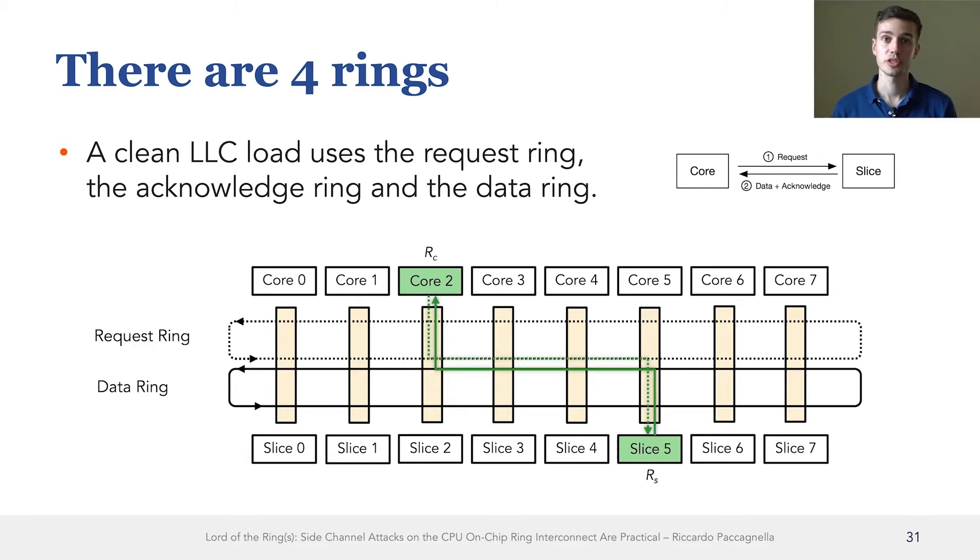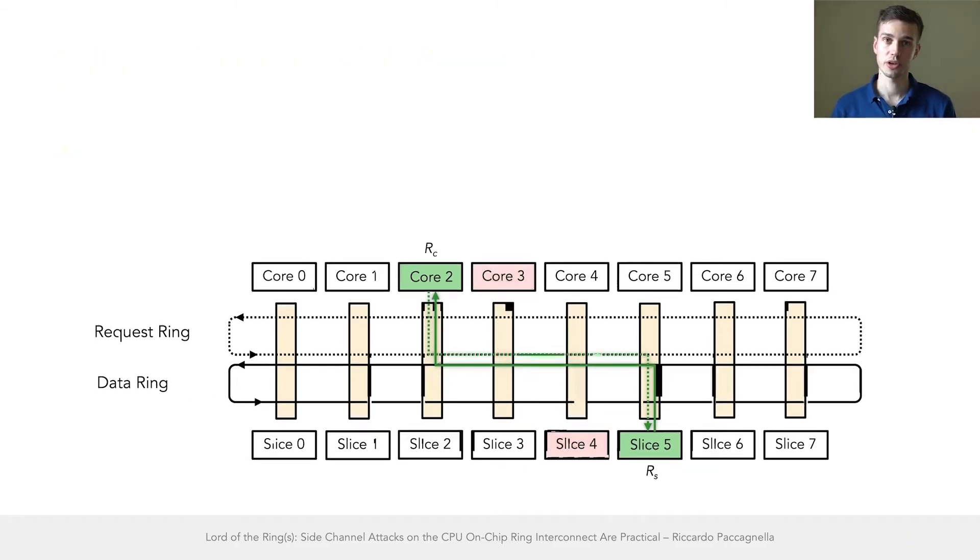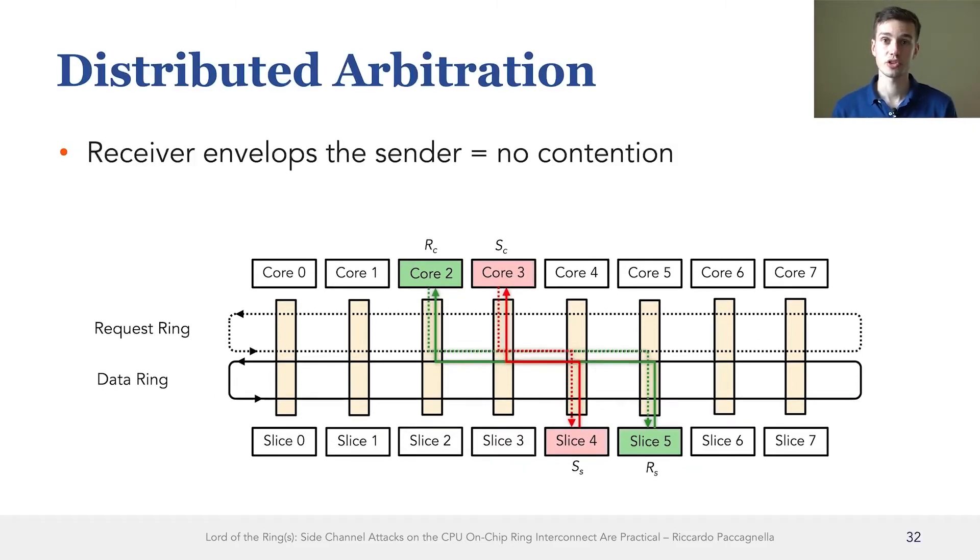The next piece of information which is crucial to understanding contention on the ring interconnect is the distributed arbitration policy. This arbitration policy can be summarized with a sentence saying that traffic already on the ring always has priority over new traffic.